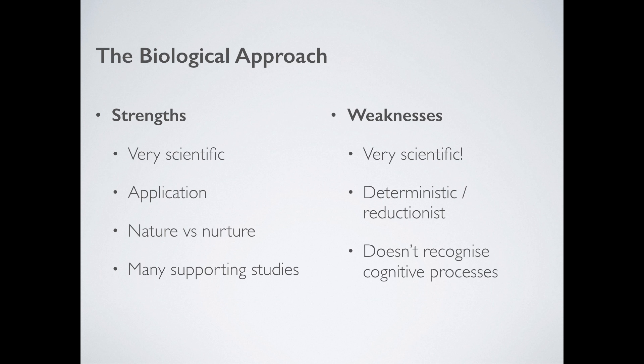The biological approach also doesn't recognise cognitive processes. For example, different people react in different ways even if their biology is the same. We all know people who are incredibly stressed out by exams, and we all know people that it doesn't phase at all. The stress chemicals and hormones are the same, so why does it have a different impact? That cannot be explained by the biological approach. We might even say it is one vast oversimplification — we cannot explain away vast, incredibly complex human behaviour in terms of a few neurons or a few chemicals. It simply can't be done.